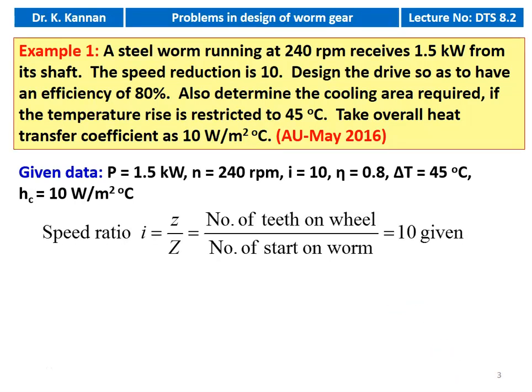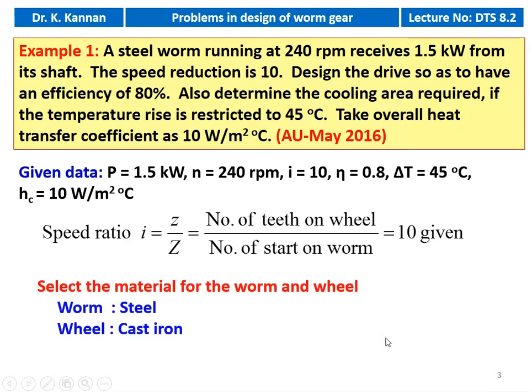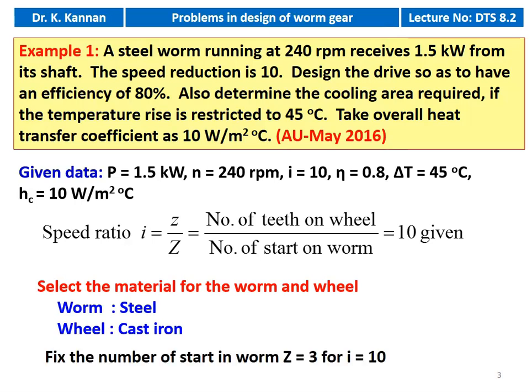First we calculate the speed ratio. It is given in the example: i = small z / capital Z, that is number of teeth on the wheel divided by number of starts on the worm. Then we select the material. The material given for the worm is steel. For the wheel, we assume cast iron because the power is very low at 1.5 kilowatt. We have two choices: either cast iron or bronze. For lower power we take cast iron. We fix the number of starts: Z = 3 for speed reduction of 10.